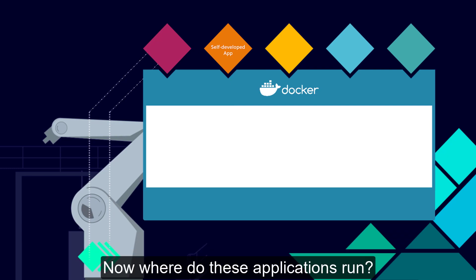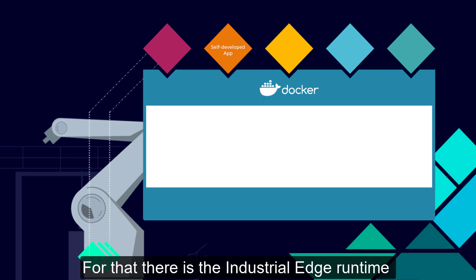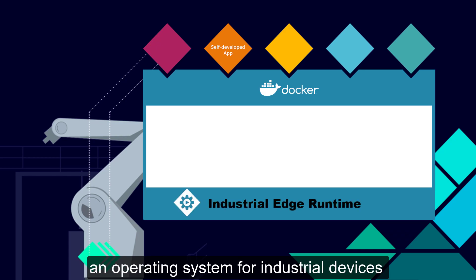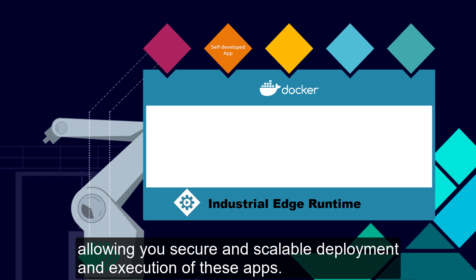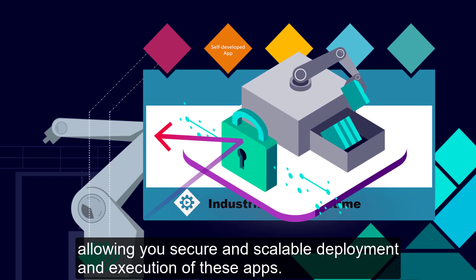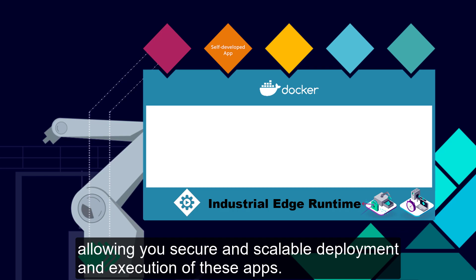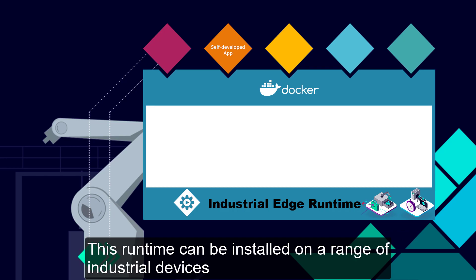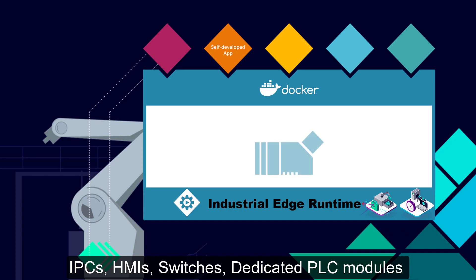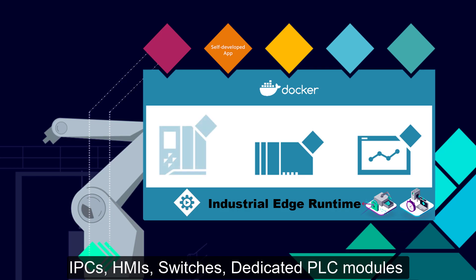Now where would these applications run? For that there is the Industrial Edge runtime. It's sort of an operating system for industrial devices, allowing you secure and scalable deployment and execution of these apps. This runtime can be installed on a range of industrial devices like IPCs, HMIs — so touch panels — network switches or dedicated PLC modules, so that you can deploy the platform on the right hardware for your application.